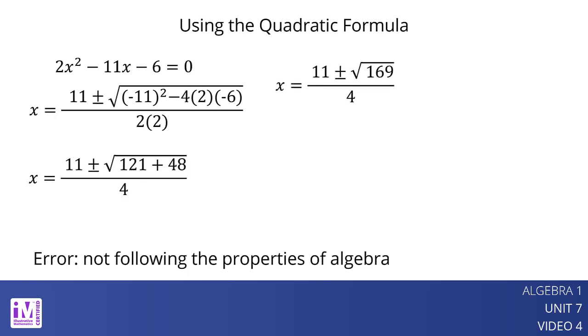Let's finish by evaluating 11 plus or minus the square root of 169 all over 4 correctly. So x equals 6 and x equals negative 1 half are solutions to the equation 2x squared minus 11x minus 6 equals 0.